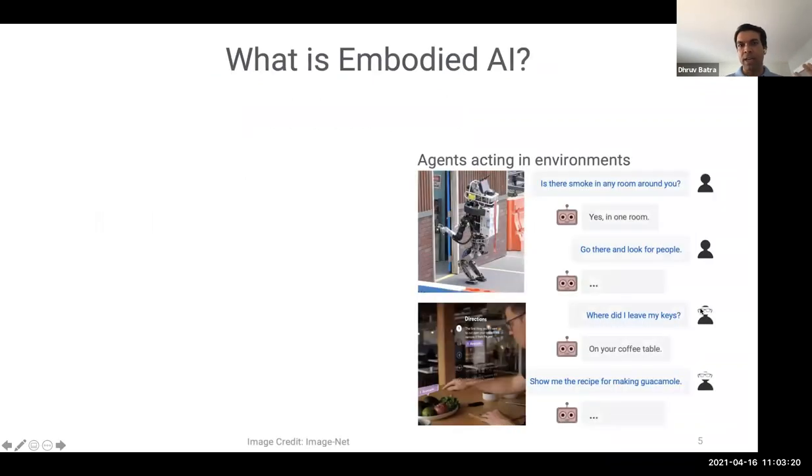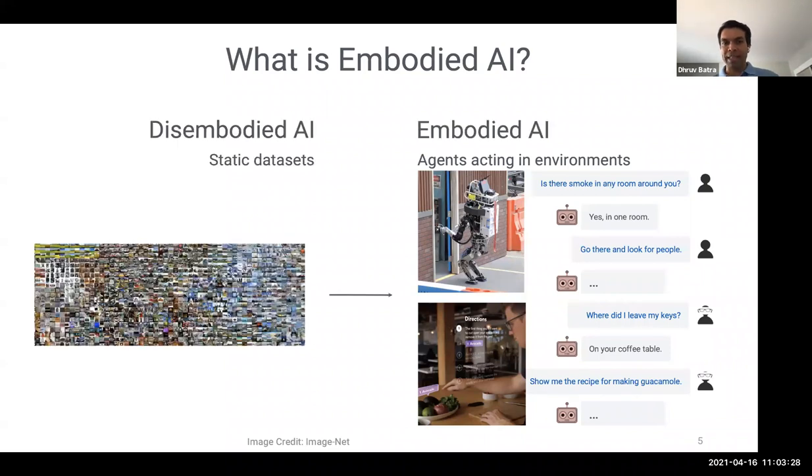So what is embodiment hypothesis? For this is this idea from cognitive science, and I encourage everyone to read this paper. But the embodiment hypothesis is the idea that intelligence emerges in the interaction of an agent with its environment and as a result of sensory motor activity. There has been a growing shift in machine learning from learning on static data sets of images or text downloaded from the web to the study of agents acting in environments.